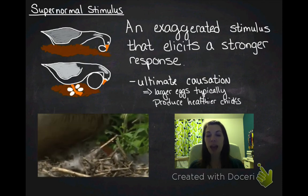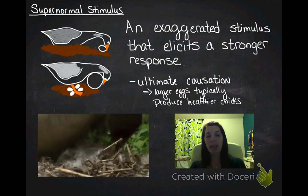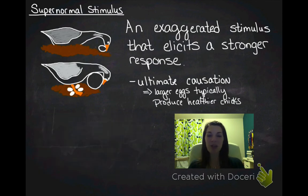We have to talk about evolutionarily what's happening there because that doesn't really make sense, right? Why would you roll a fake egg or a pool ball or a block or a Russian nesting doll back to your nest over your own egg?